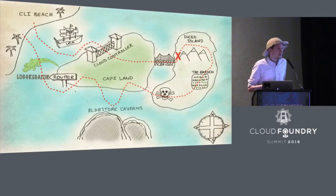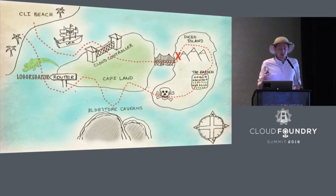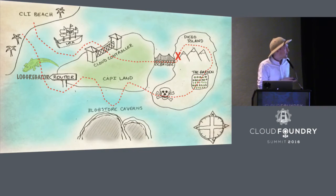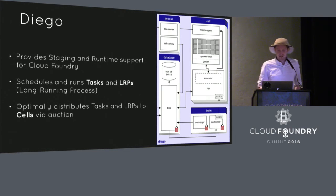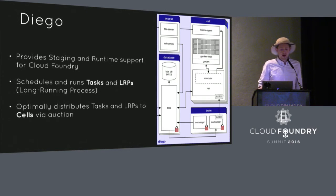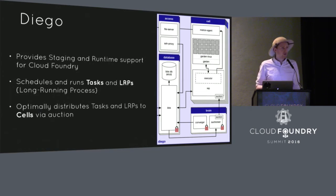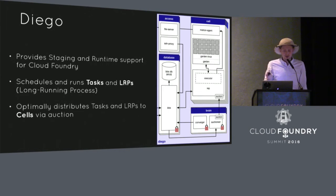Now we know what Cloud Foundry is trying to do when we push our applications. How exactly does it do this? In order to answer that, we need to cross over the CC bridge and into Diego Island. Diego is the component of Cloud Foundry that provides staging and runtime support. At its core, Diego is a scheduler, able to schedule two types of workload: tasks and LRPs. One of its other features is taking all incoming workload and optimally distributing it across a cluster of cell components.